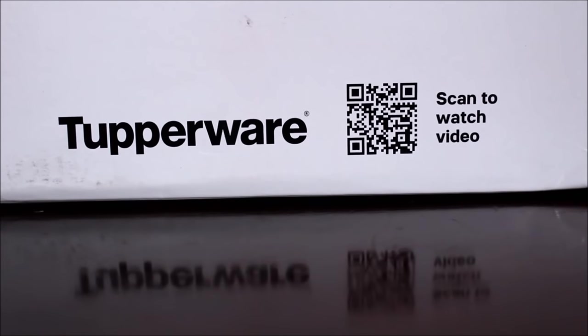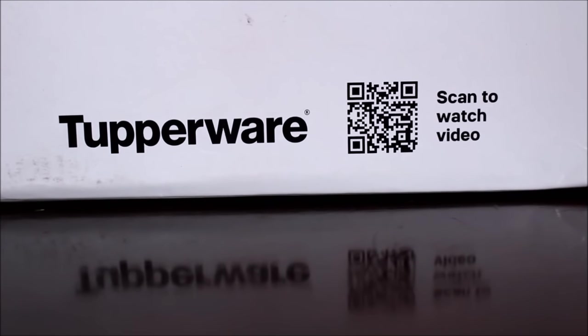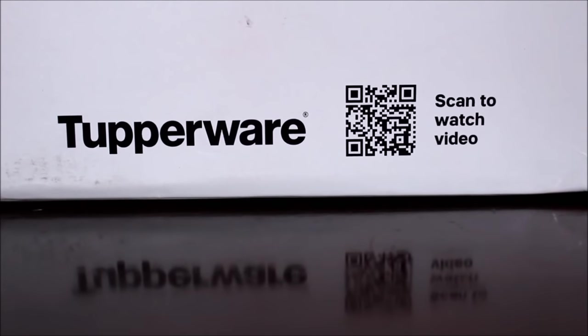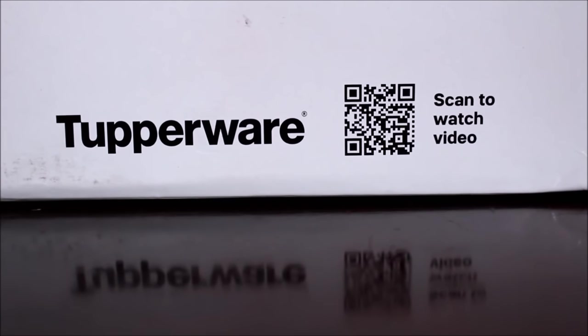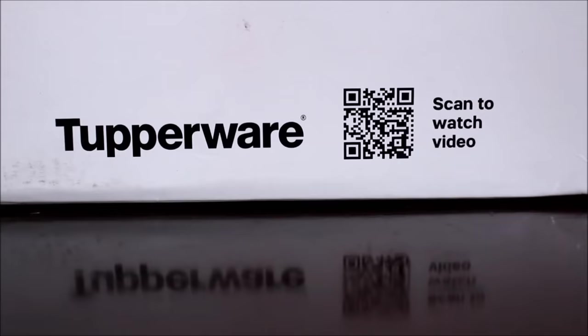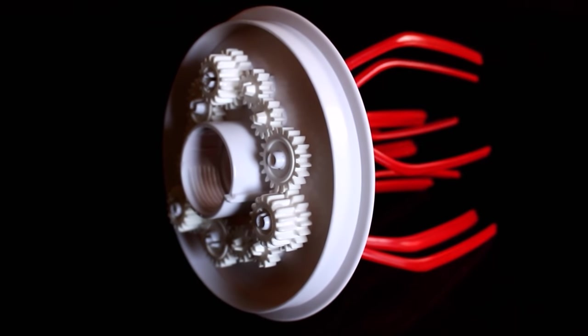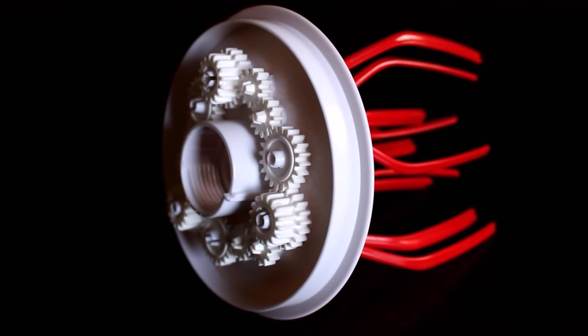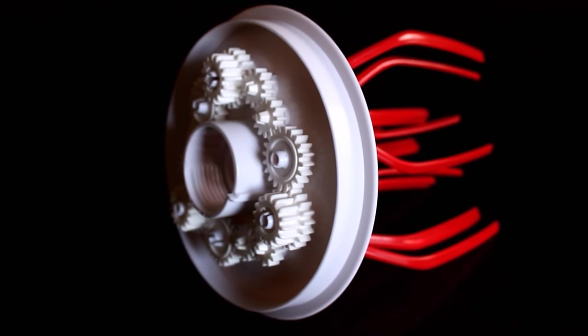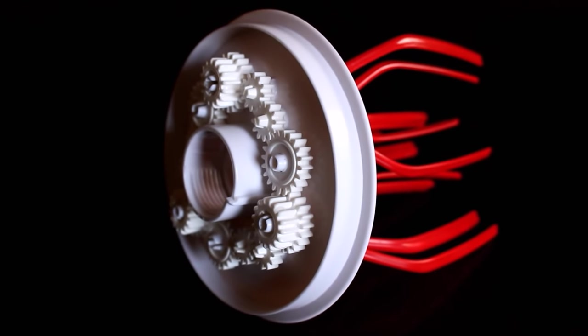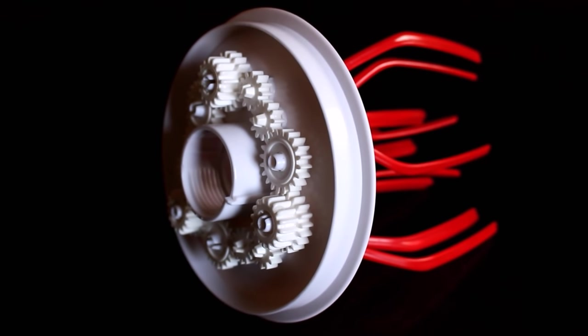What I really liked about this product is they have given the QR code on the box itself where you can scan and watch the video. You can prepare many different recipes using this particular product, right from whipping the cream in under two minutes to whipping soft and fluffy eggs for your meringues.